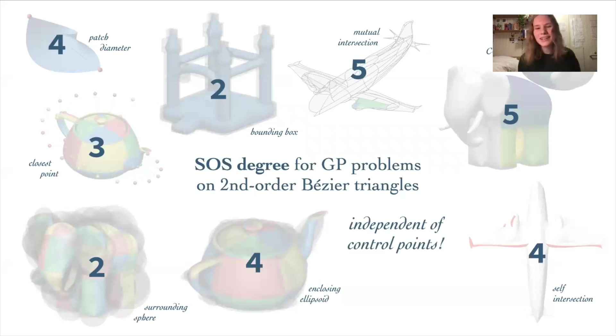And the other key finding here is that even though we change the control points of the patch each time we solve this problem, the degree we need doesn't change. So we can use these same degrees now every time we want to solve a specific problem. You might also notice that the degrees are roughly correlated with the complexity of these problems. So, for example, the bounding boxes require a lower degree and CCD requires a relatively higher one.